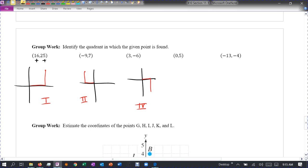Okay, next one, zero five. So I don't go anywhere left and right. I just go straight up. So I would actually not be in a quadrant. I would actually be on the y-axis.